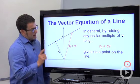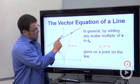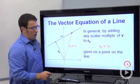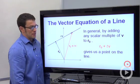And so the idea here is, I can get any point on this line by adding an appropriate scalar multiple of v to r0. So r0 plus some scalar multiple of v is going to give me any point on this line.